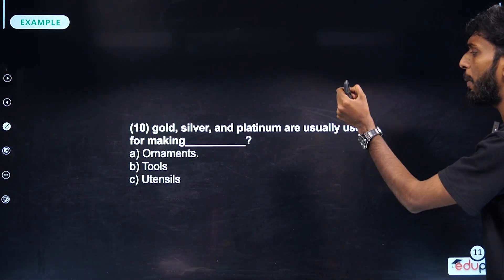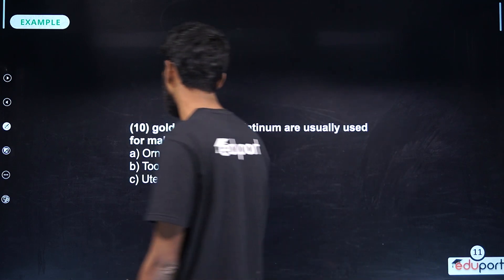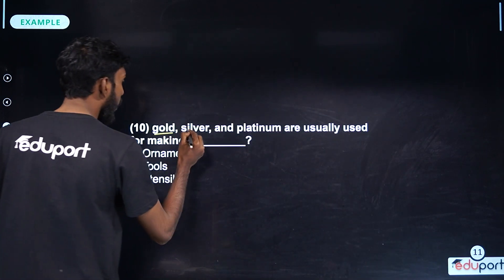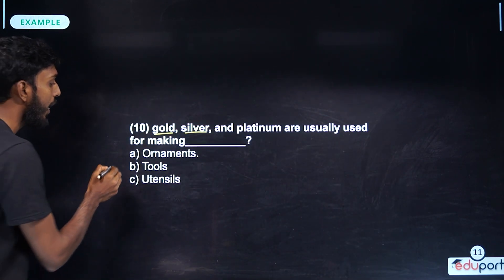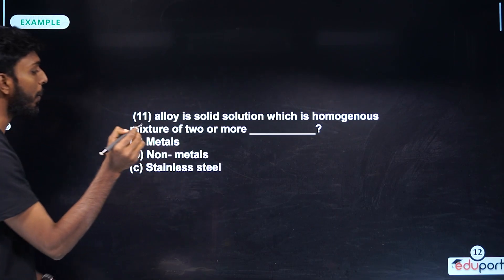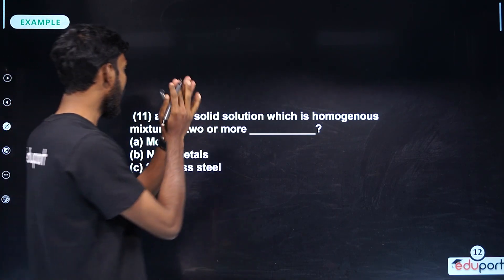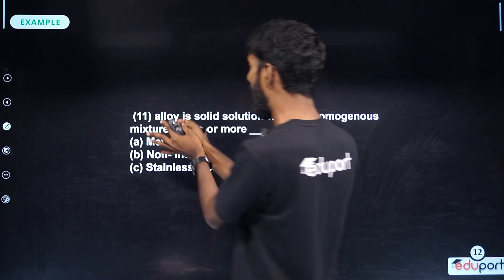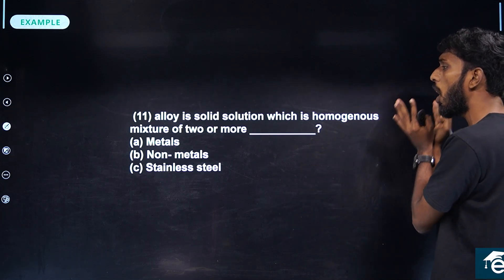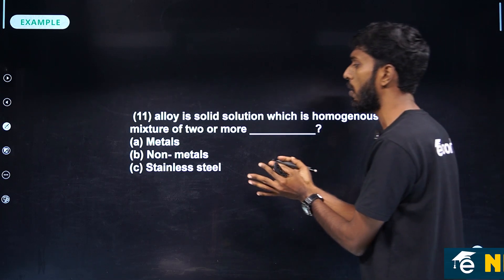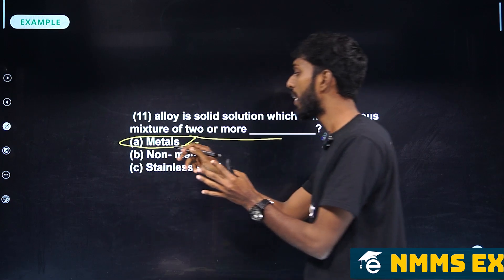Gold, silver, and platinum are usually used for making ornaments. Alloy is a solid solution which is a homogeneous mixture of two or more metals.